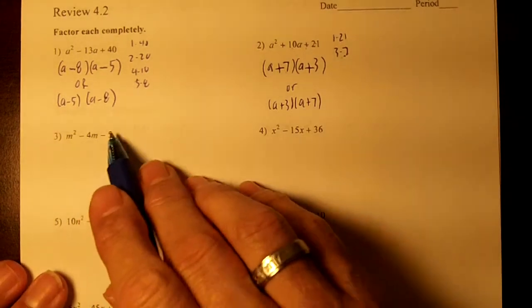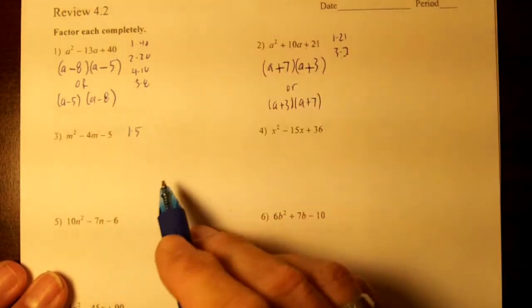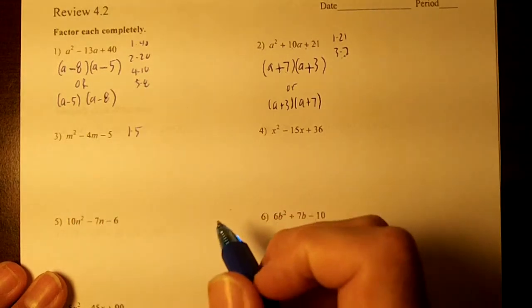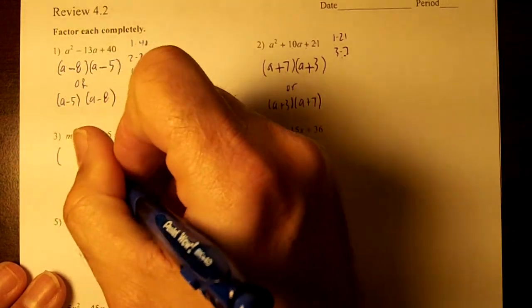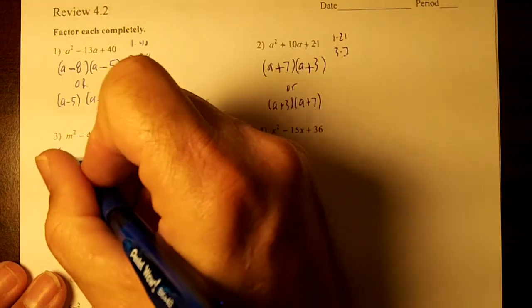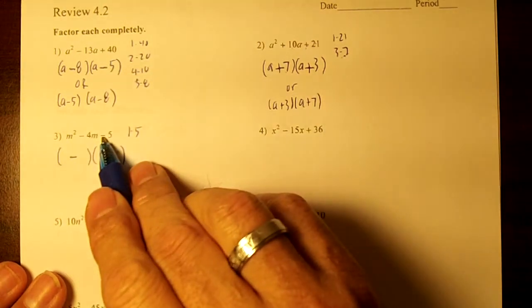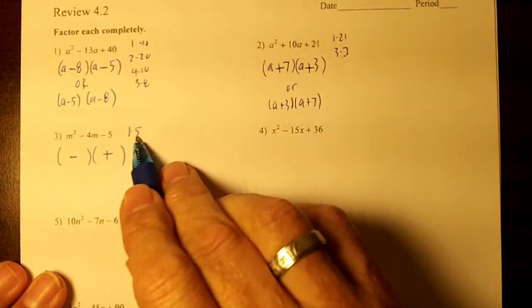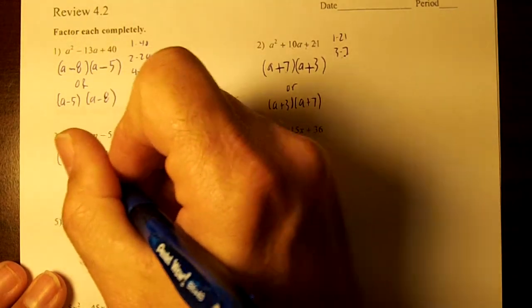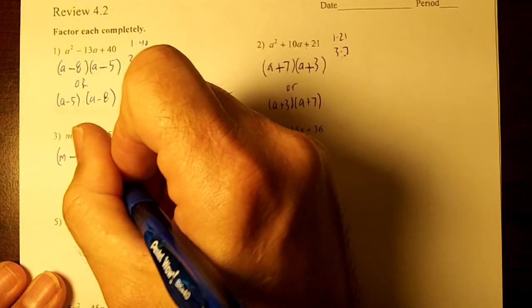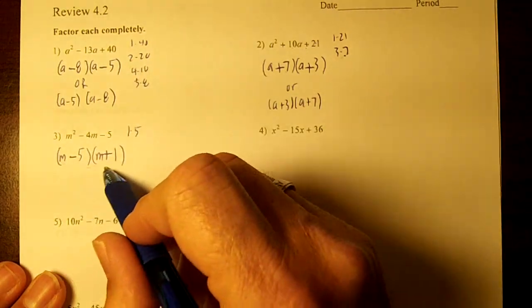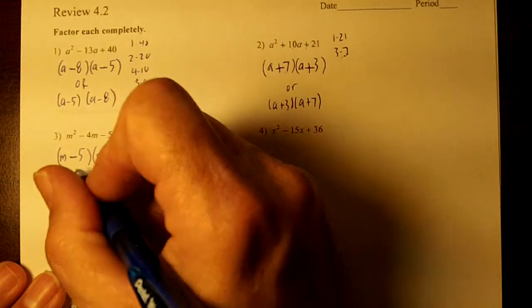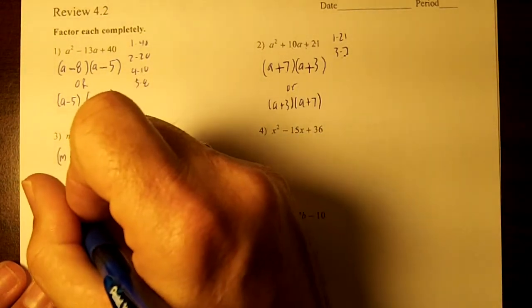The next one. Factors of 5 are just 1 and 5. We want to subtract and get 4, so these subtract and give us 4. Draw the two parentheses. Drop your middle sign. This sign means we're going to subtract. If we subtract, the signs are different. Put your largest factor first, so the 5 goes here, the 1 goes here. You have M and M. If you do your FOIL method, you'll do negative 5 plus 1 and you'll get a negative 4M. Remember, you can also write these backwards.